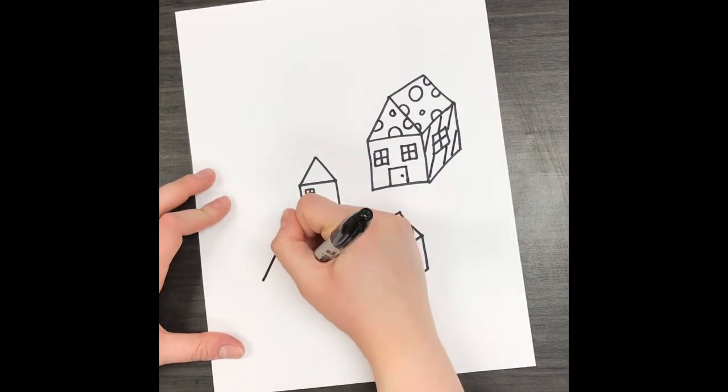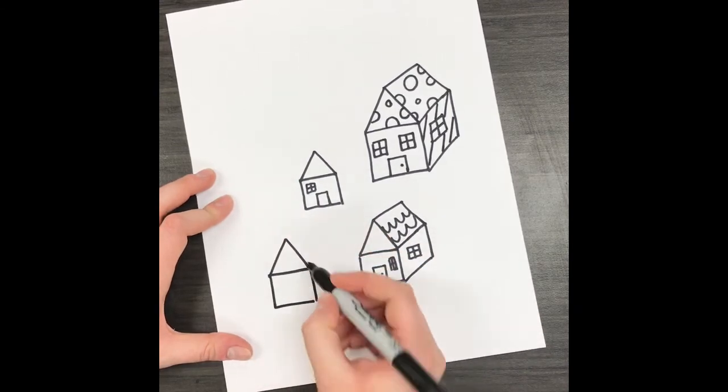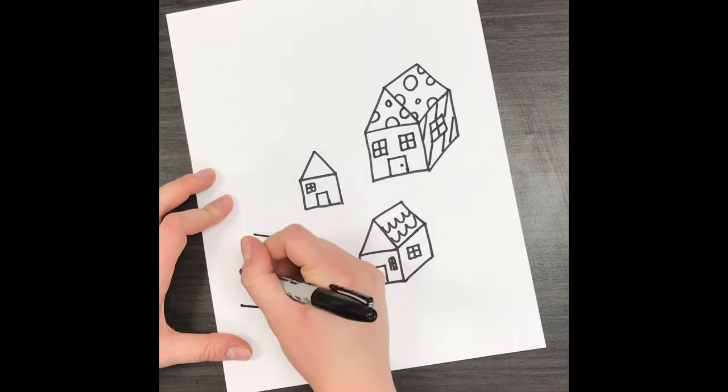If you would like to draw a house going in the opposite direction, you would just start off the process in the same way, but then draw the lines in the opposite direction.